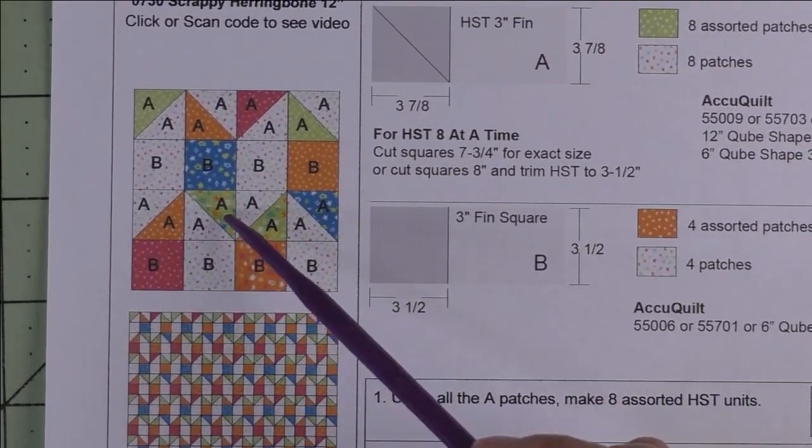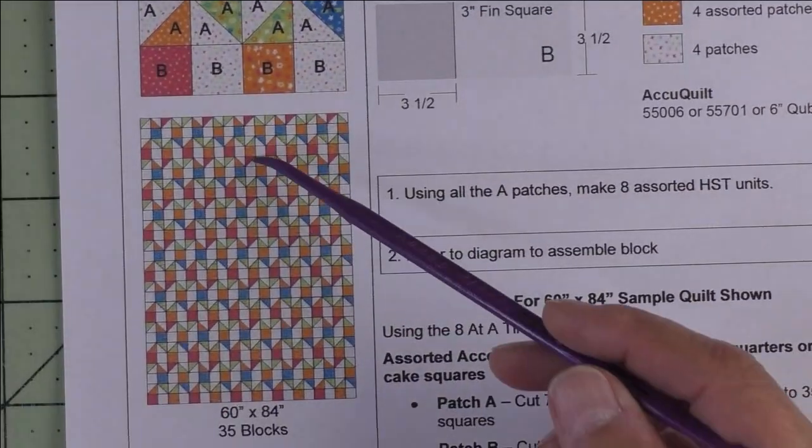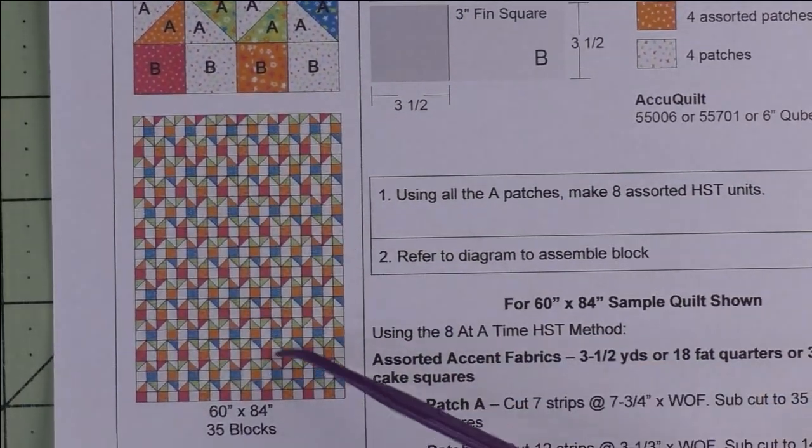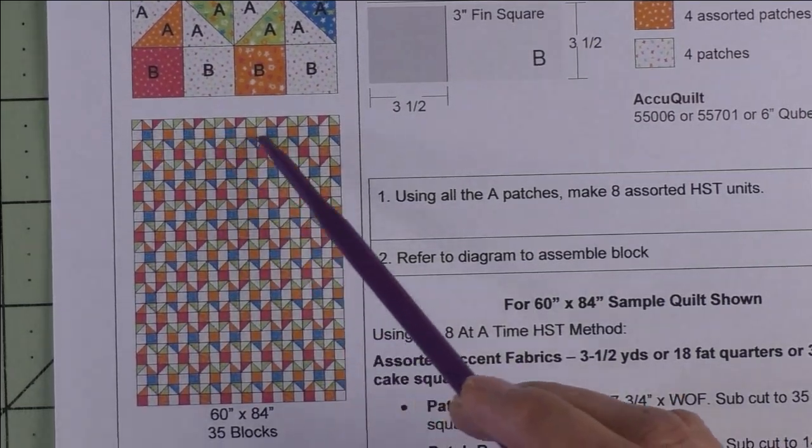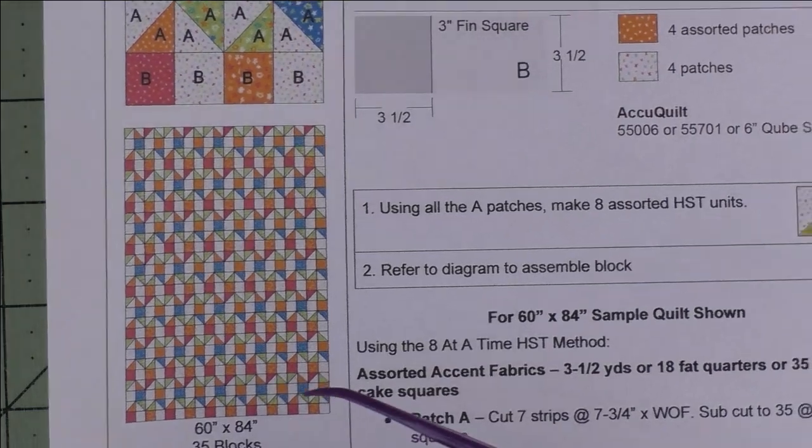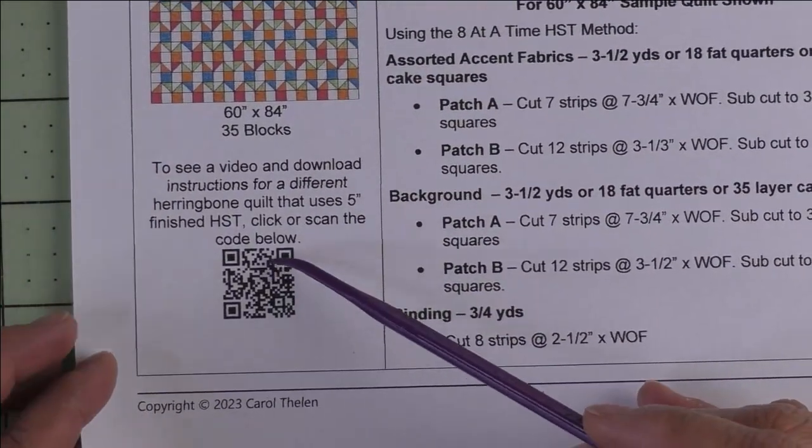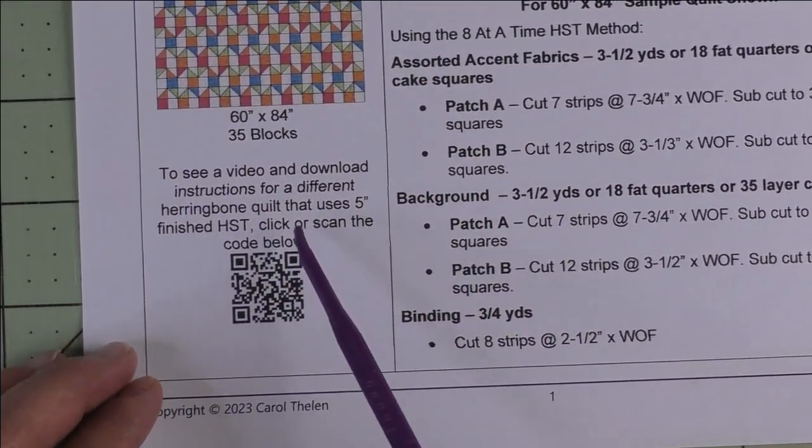Here is the block and here is what the quilt looks like with all the blocks set block to block. This is 35 blocks set five across and seven down. I have another video and more instructions for a different kind of herringbone quilt that uses just five inch half square triangles.